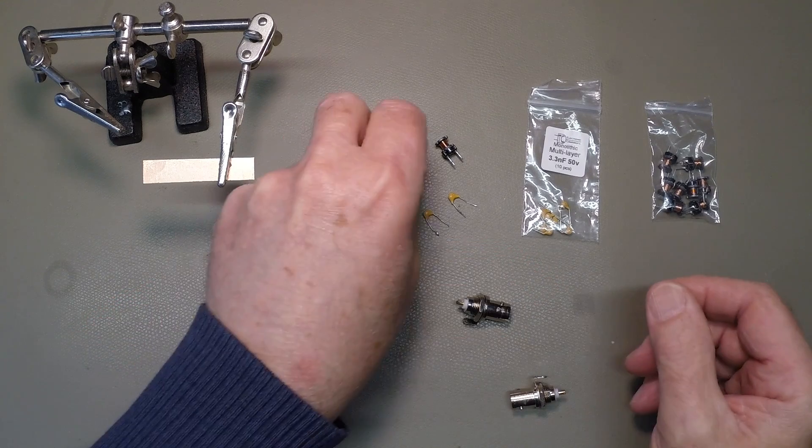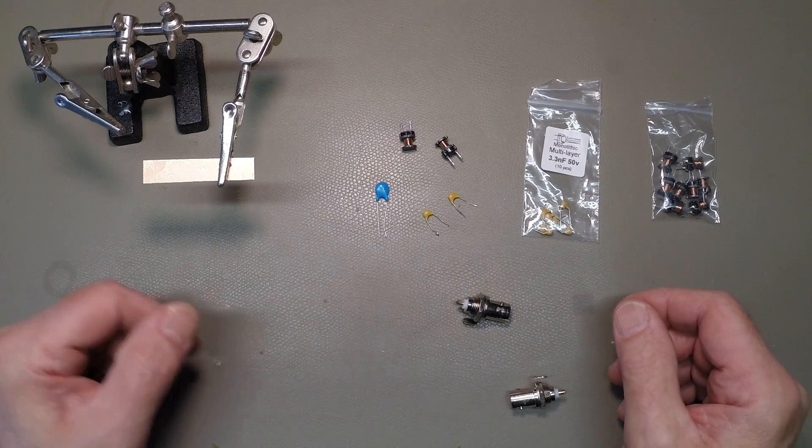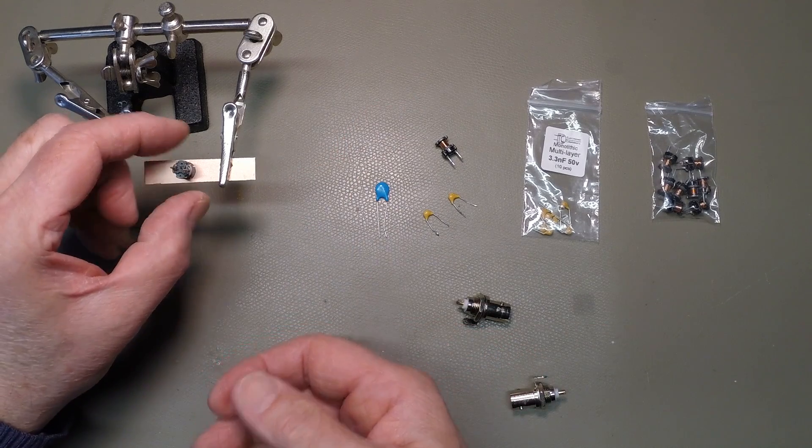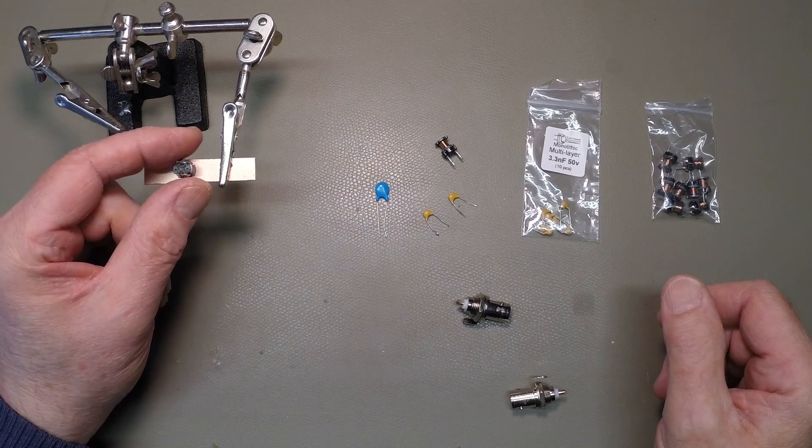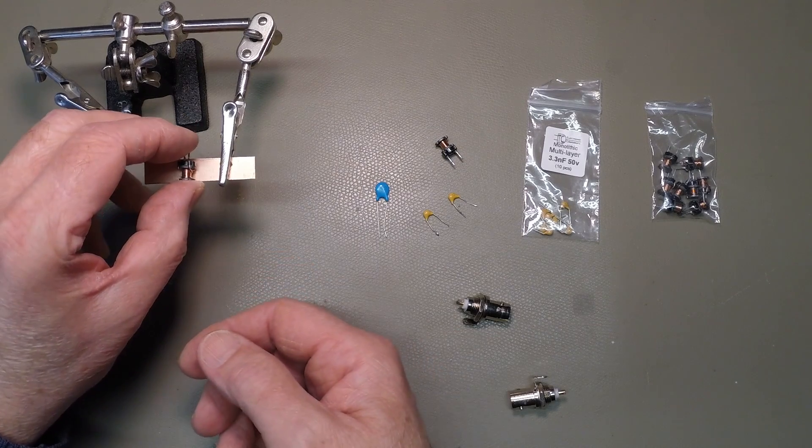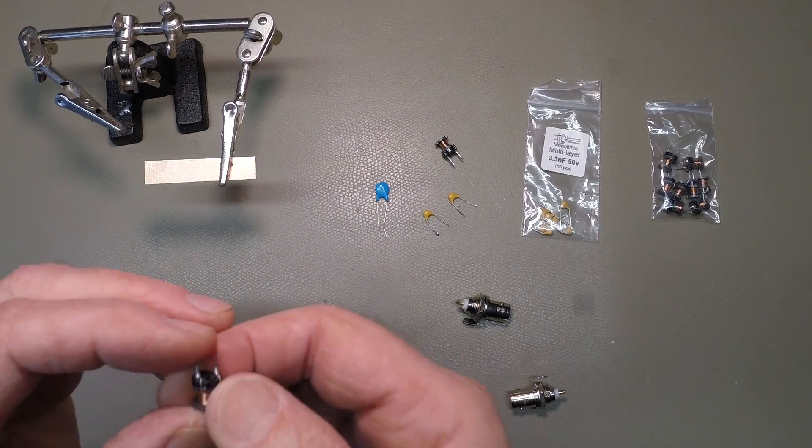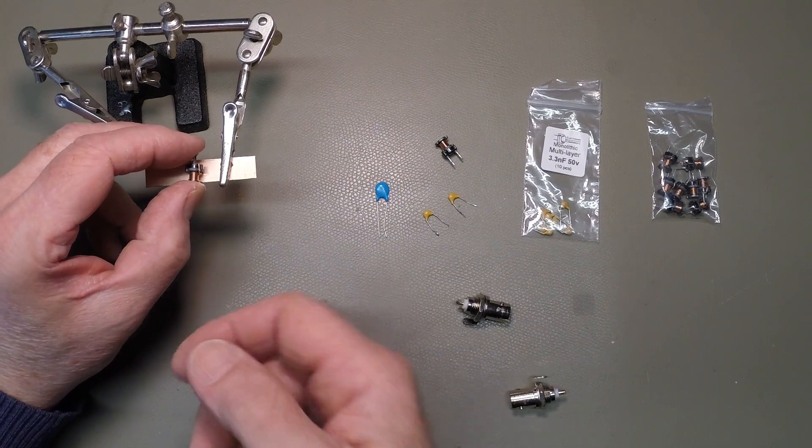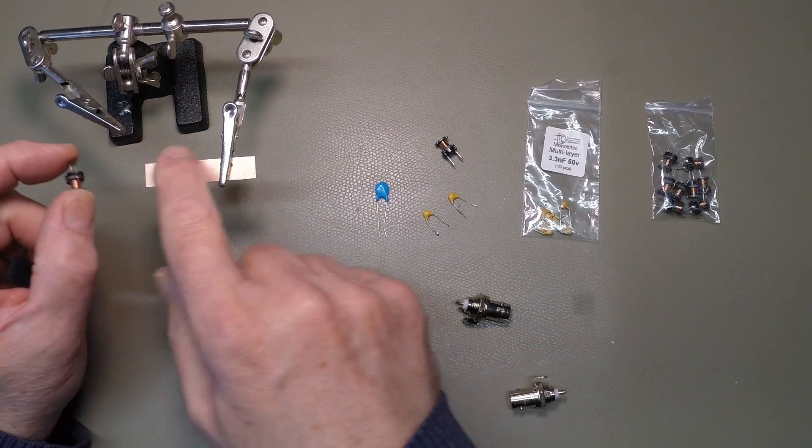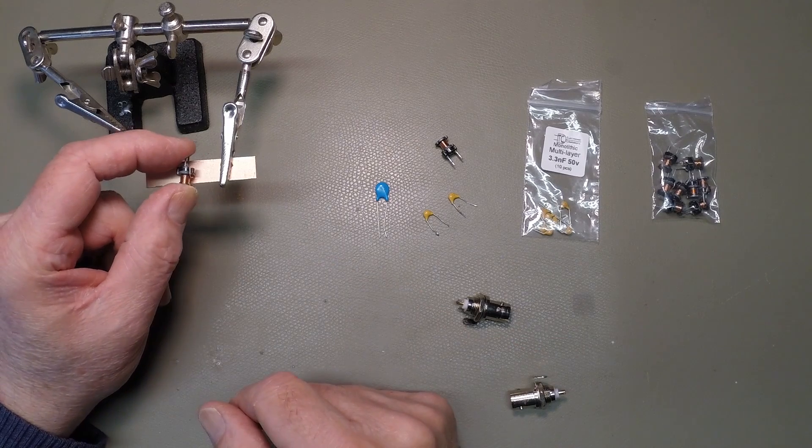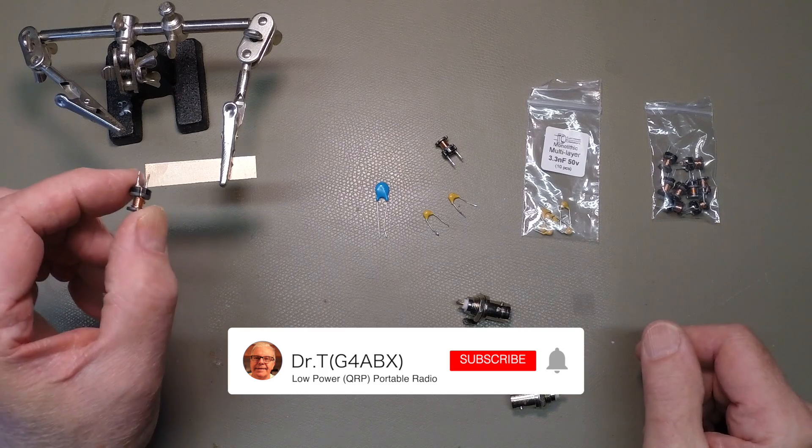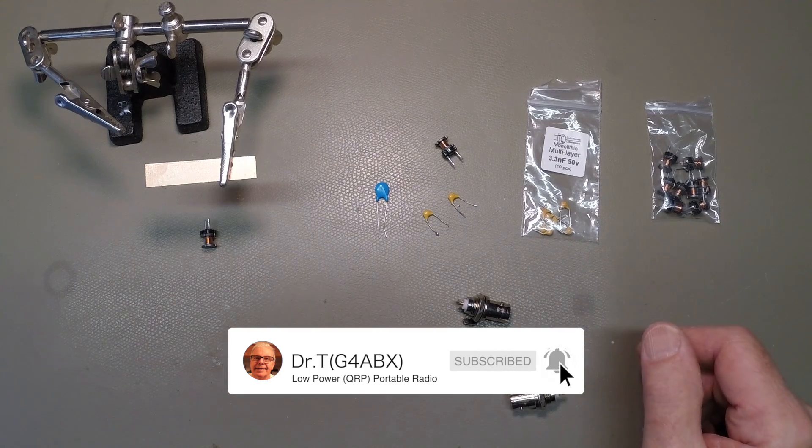So, there's the components. Essentially what we're going to do is wire everything, stick everything to the board, wire between the components, ugly style. There's no printed circuit board here, so we're just literally going to solder stuff onto the laminate itself. One moment while I just power up the soldering iron.